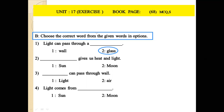Number 2: Blank gave us heat and light. Answer: Sun. Sun gave us heat and light. Moon cannot give us heat and light. Sun gave us heat and light.